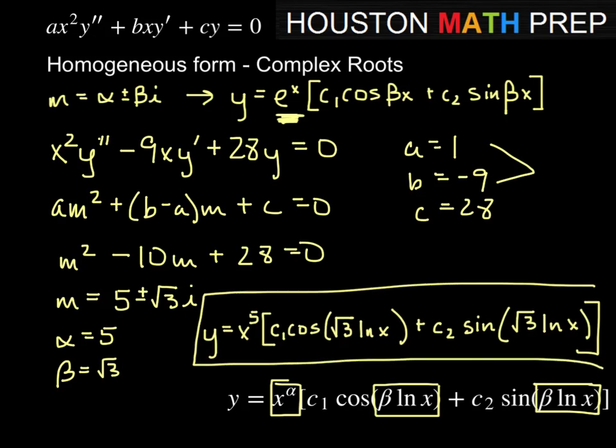So that gives you at least one example to go off of, based on your new auxiliary equation with that b minus a in the middle term. Whether you get distinct real roots, repeated real roots, or you get complex roots like we did here, it'll be one of those three forms. Now these are all homogeneous, meaning we've worked all these problems where it equals zero.